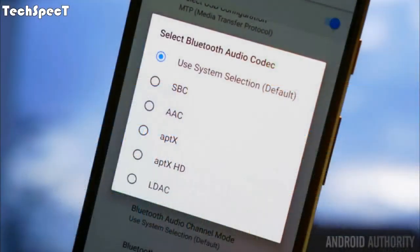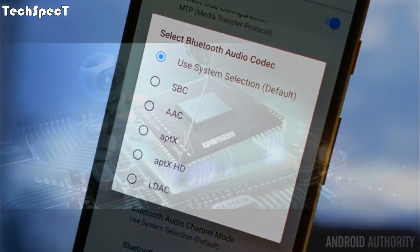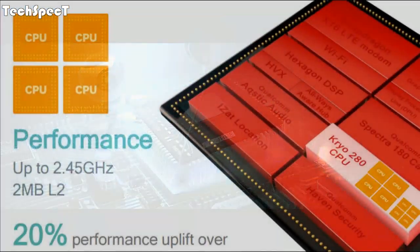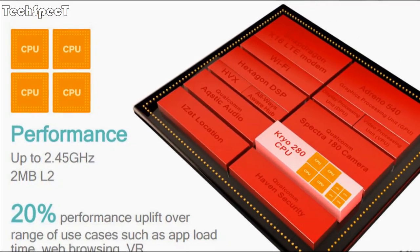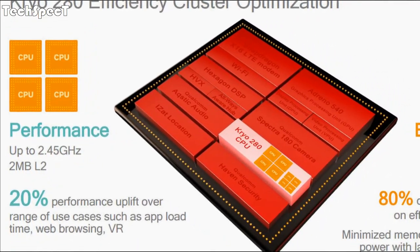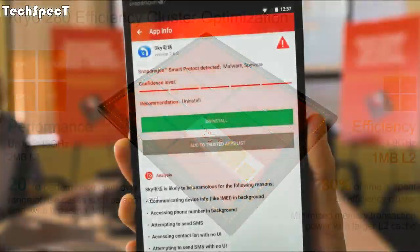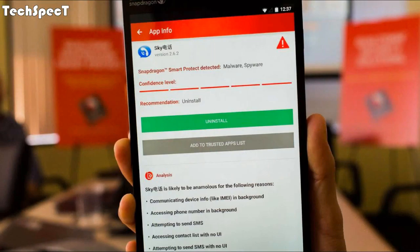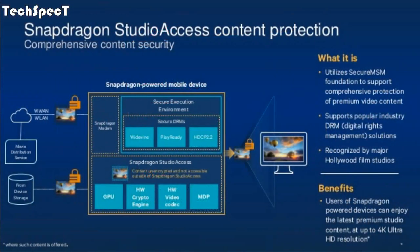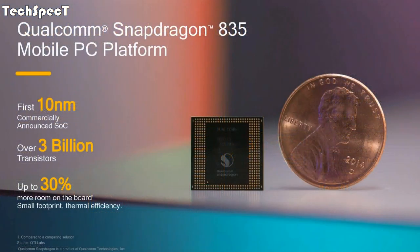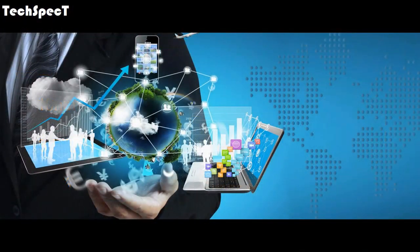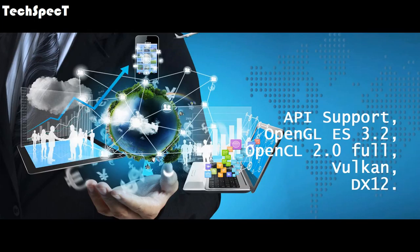Qualcomm aptX playback support: aptX Classic, aptX HD. CPU clock speed: up to 2.45 GHz, 8 CPU cores. Qualcomm Kryo 280 CPU, 64-bit architecture. DSP technology: Qualcomm Hexagon 682 DSP, Qualcomm Always-On Aware technology. Process technology: 10 nm. GPU: Qualcomm Adreno 540. API support: OpenGL ES 3.2, OpenCL 2.0 Full, Vulkan, DX12.